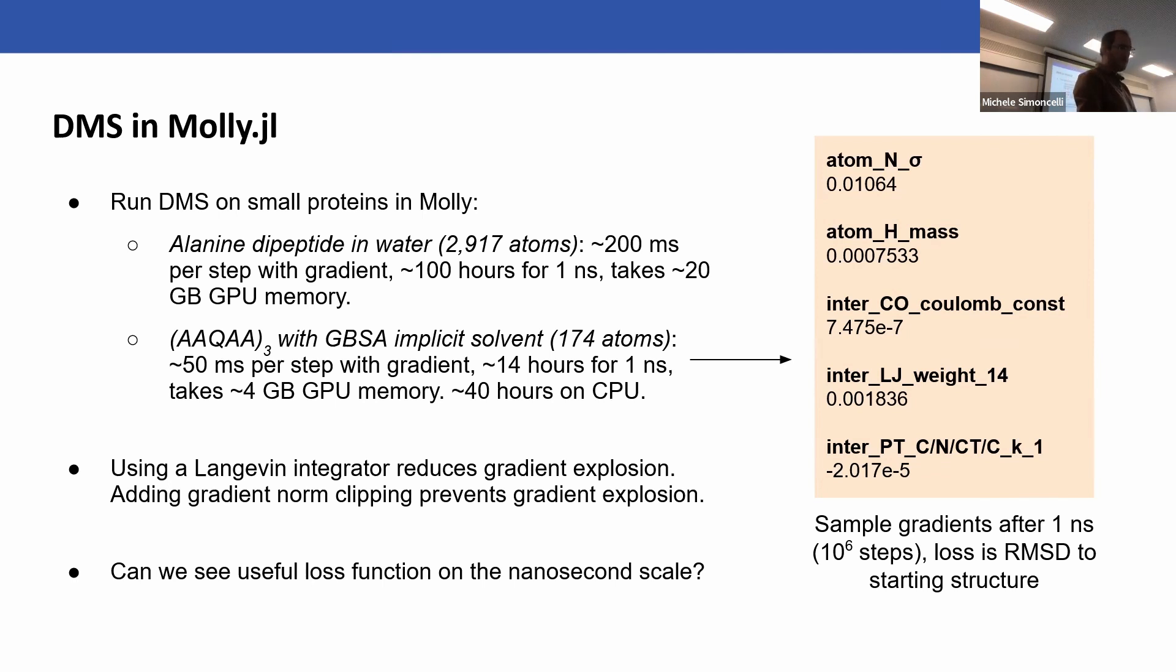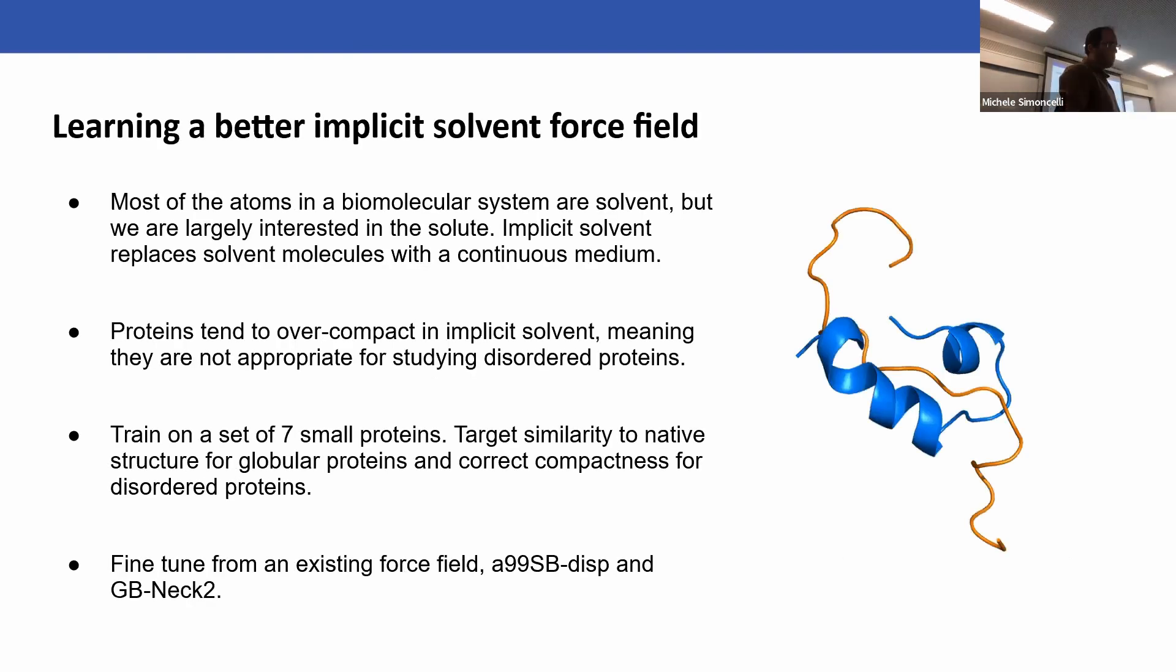We use a Langevin integrator, which basically adds a noise term and a friction term. I won't go into the details but I expect many of you have heard of it. We actually find that's really useful because it prevents gradient explosion. I think it's something to do with the constant stochasticity effectively damping down the gradients, which is quite nice to prevent them from exploding. We also add some gradient norm clipping just to stop it exploding. So the gradients actually are pretty well behaved over a million steps, which would be a very, very deep neural network. The question then arises: can we see useful loss functions on the nanosecond scale and start to train things?